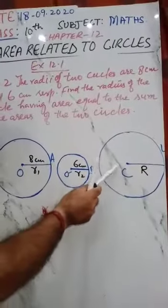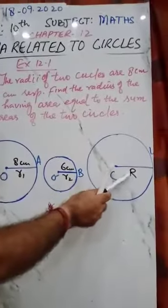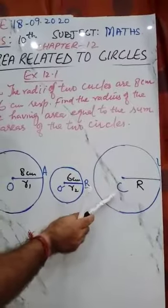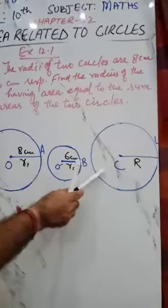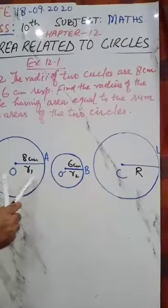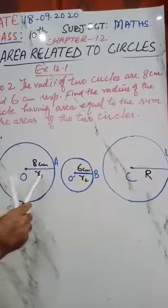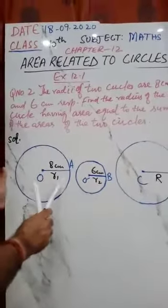So you have to find the radius of a circle whose area is equal to the sum of the areas of these two circles.